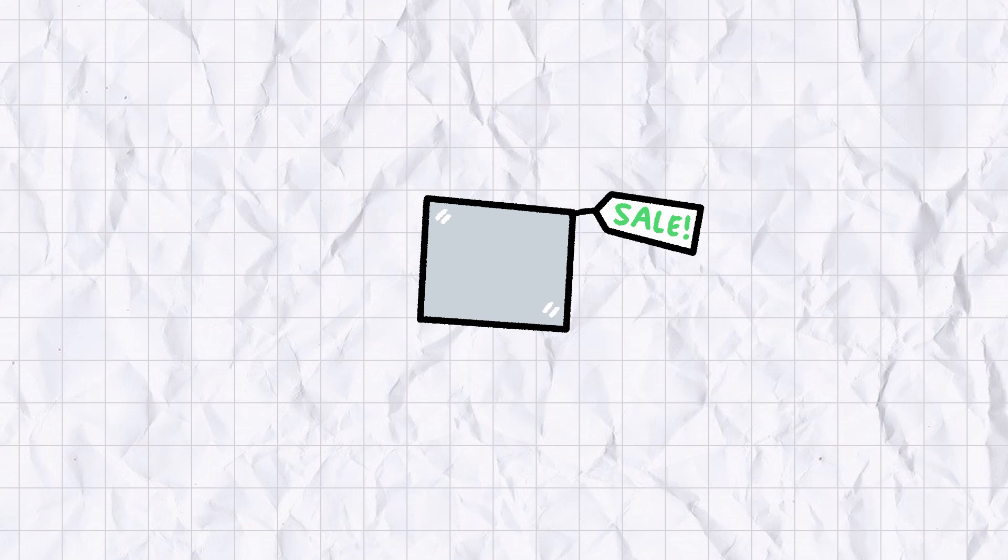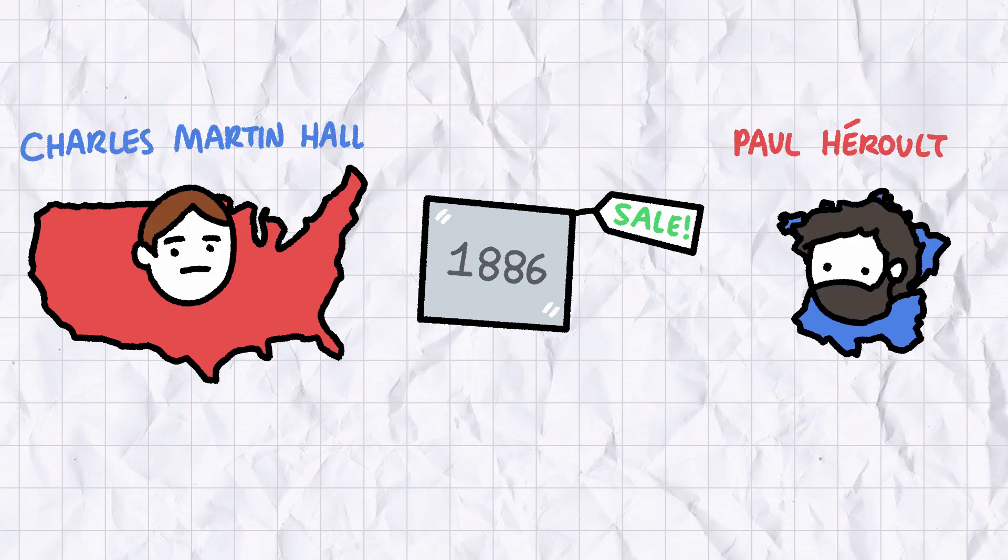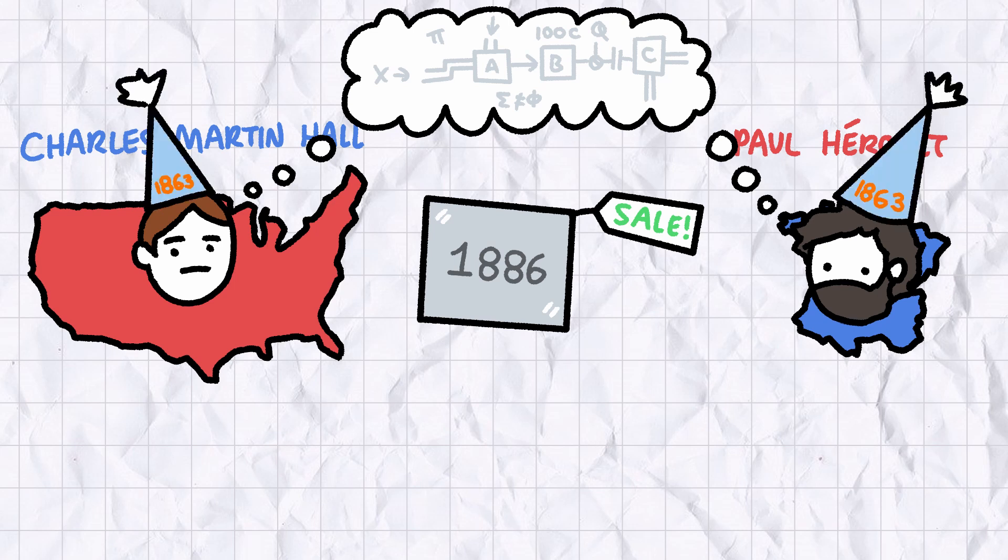Cheap aluminium wouldn't be available until 1886, when by sheer coincidence, a cost effective synthesis was independently developed by two men on opposite ends of the Atlantic Ocean, the American chemist Charles Martin Hall and the French engineer Paul Heroult. They each came up with near identical routes for aluminium production, totally independent of one another. And in another weird coincidence, they were literally born in the same year as each other.